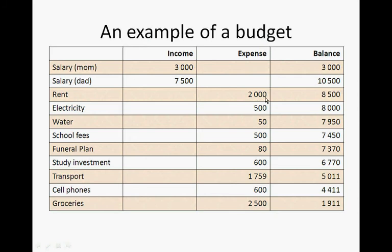Now the expenses are rent, so we subtract 2,000 from 10,500 to get 8,500. Electricity: we minus 500 to get 8,000. Water is 50 rand, so we minus 50 rand to get 7,950 rand. We minus school fees to get 7,450. We minus the funeral plan to get 7,350. We minus the study investment to get 6,770 rand. We minus transport for the month, which is 1,759 rand — quite a lot, but it's probably for the whole family — so we end up with 5,011 rand.